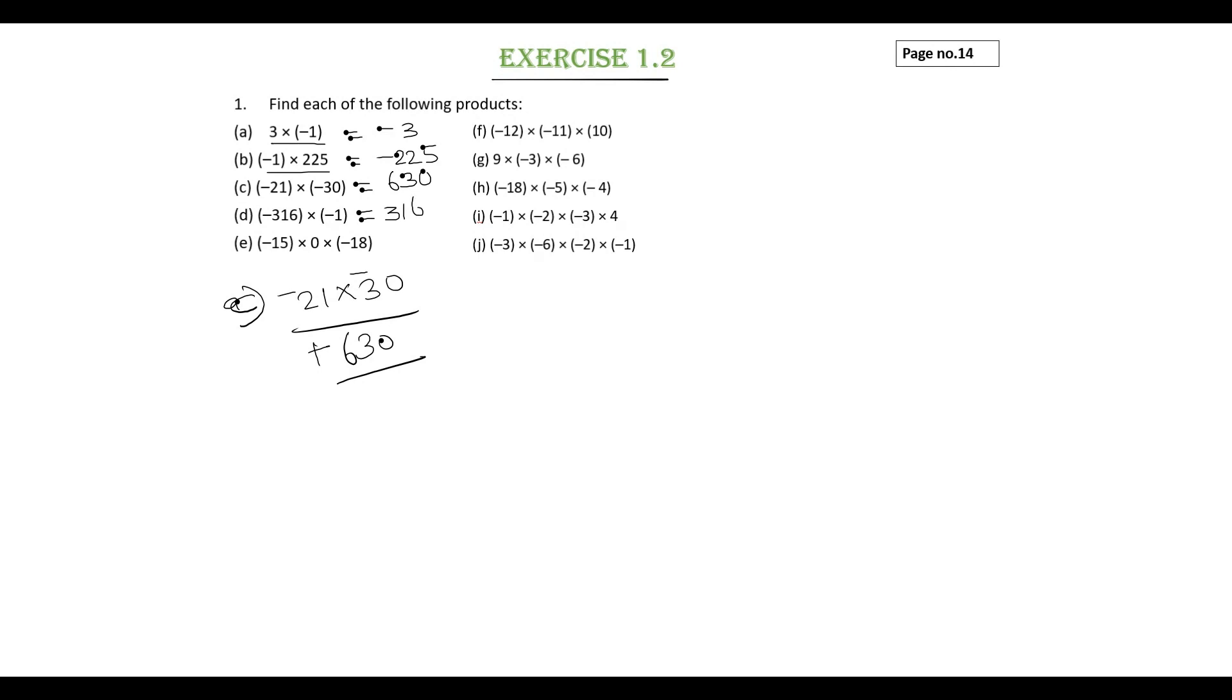Minus 15 into 0 into minus 18. We have seen multiplication of 0. Any integer into 0 is 0, and 0 into any integer is 0.